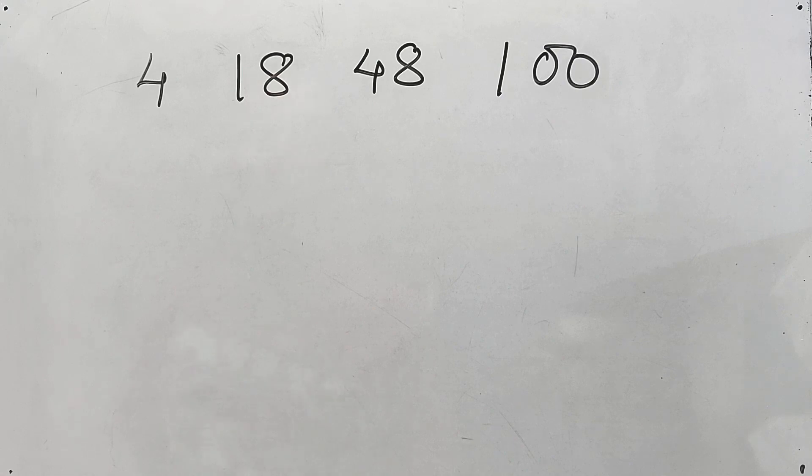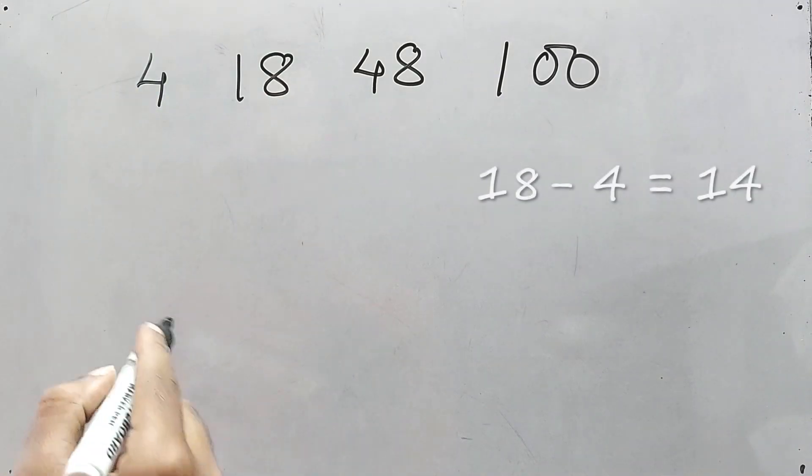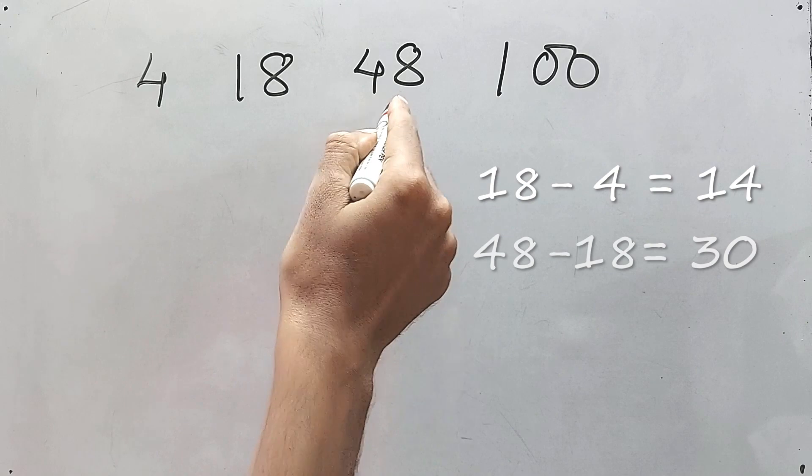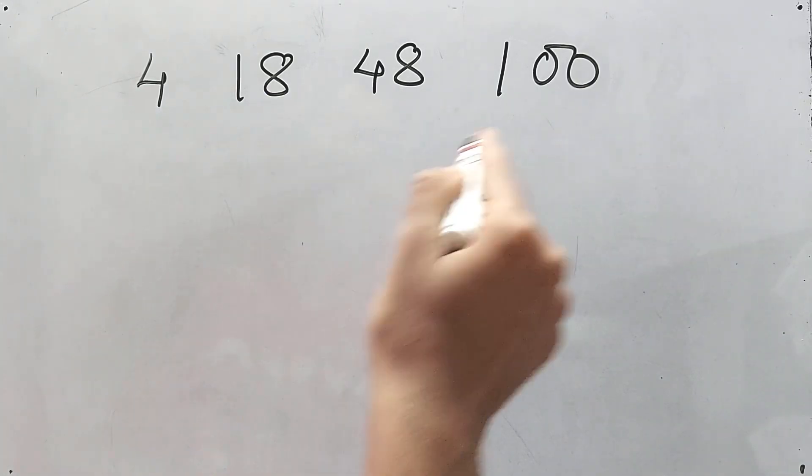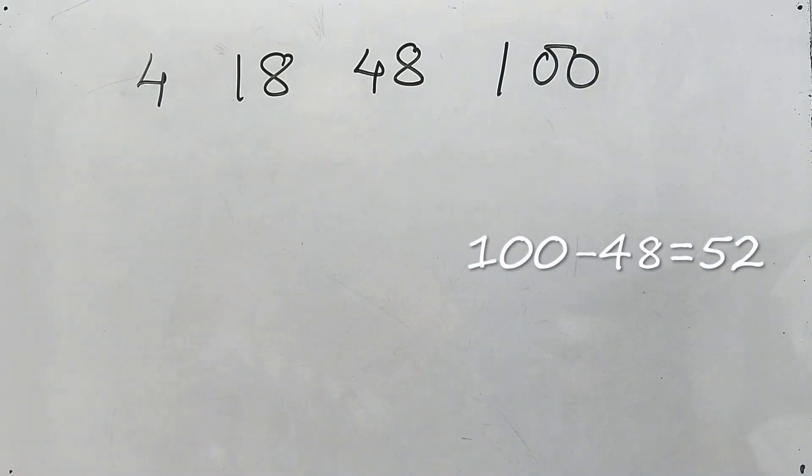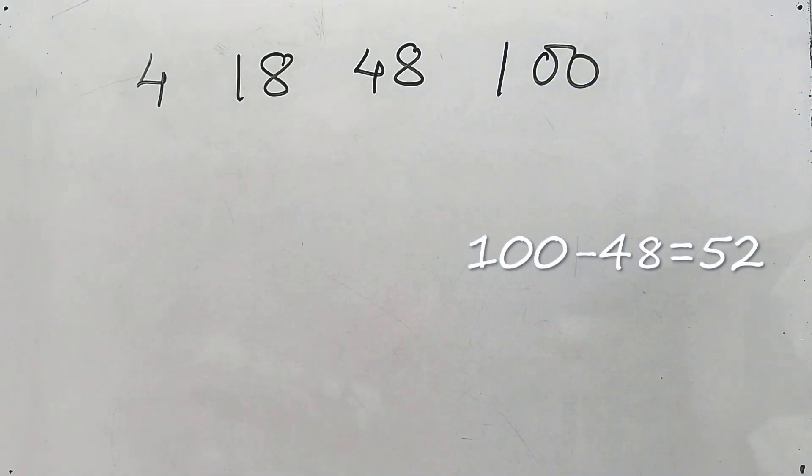See, you may think like okay, 18 minus 4 is 14, then 48 minus 18 is 30. Then 14 and 30, and then 100 minus 48 is 52. No, it is not working.